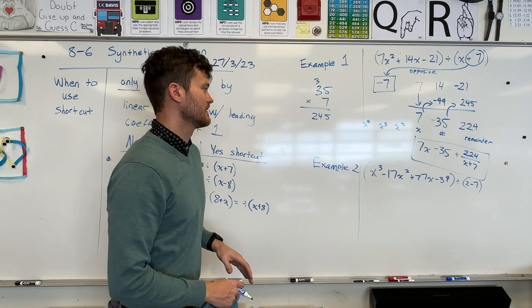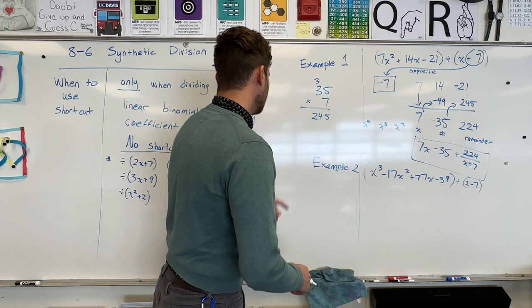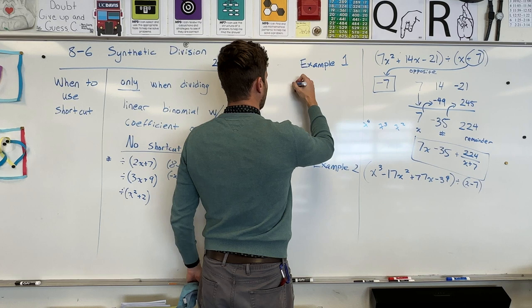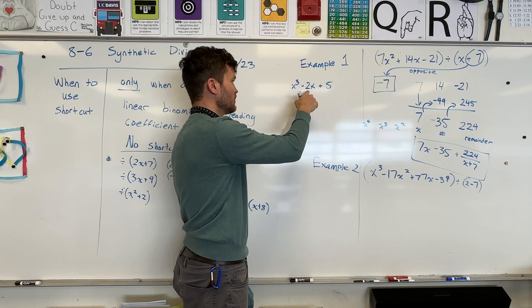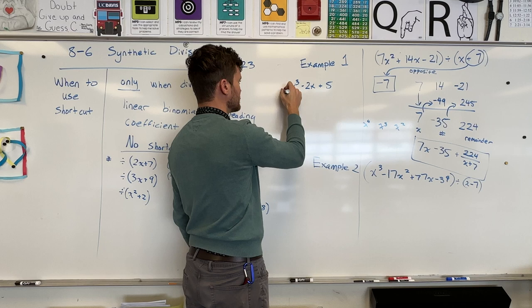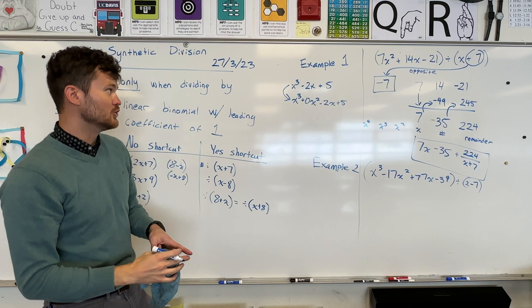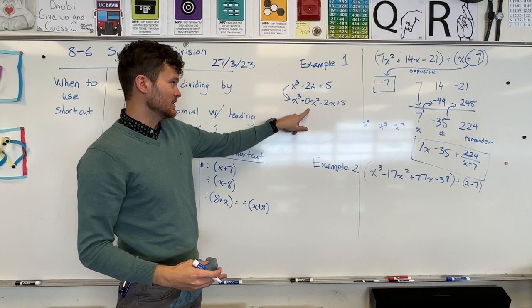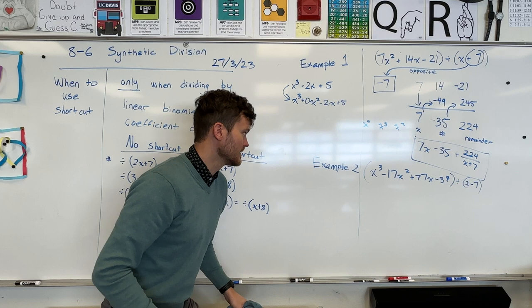How would a placeholder look doing this? Let's say x cubed minus 2x plus 5. This one would need a placeholder. It goes degree 3, degree 1, degree 0 — they have to be descending degrees. I skipped my x squared term. So you rewrite it as x cubed plus 0x squared minus 2x plus 5. That zero applies to synthetic division as well — sometimes you'll have a 0 as one of your coefficients.